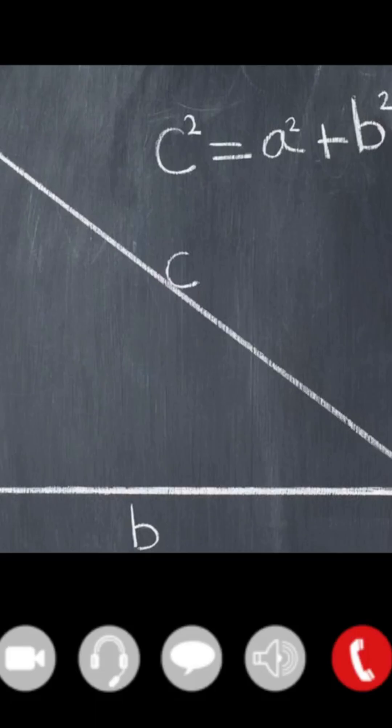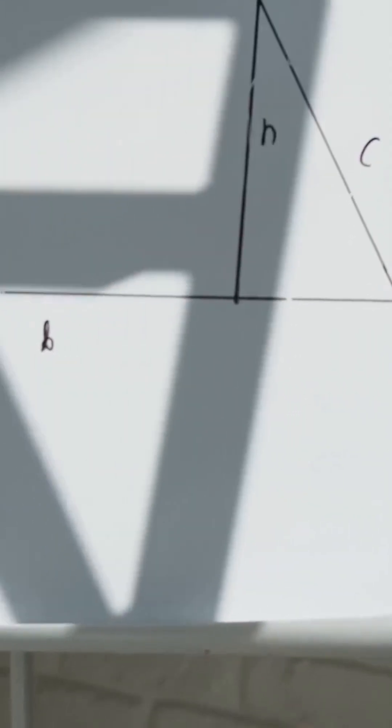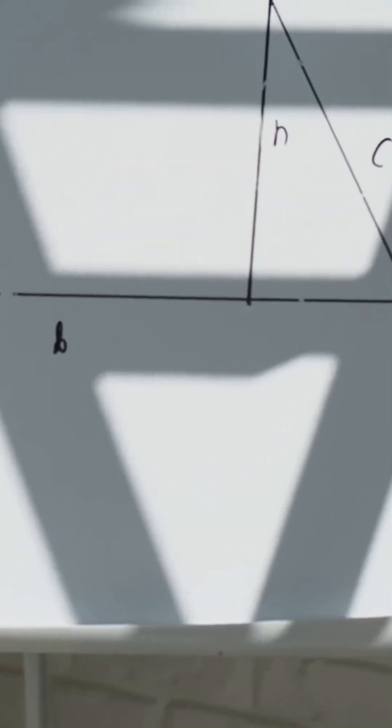The longest side is called the hypotenuse. The theorem states A squared plus B squared equals C squared.